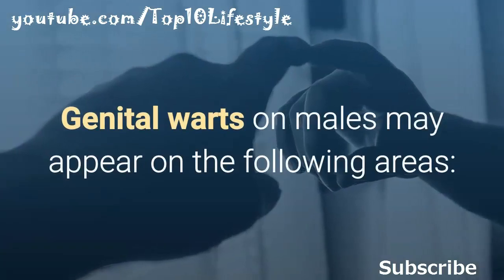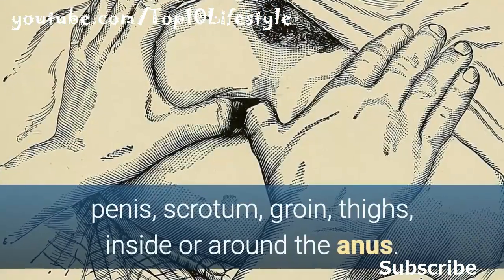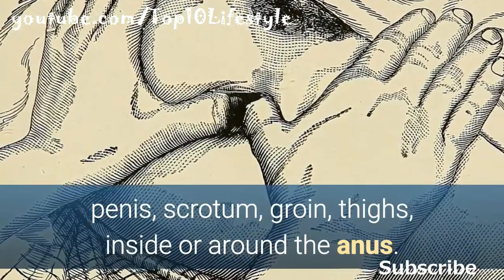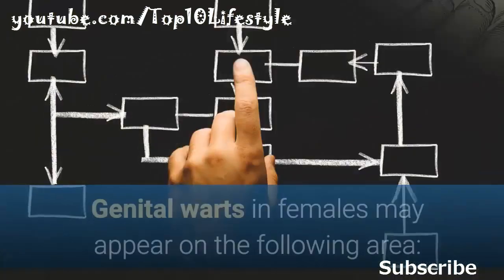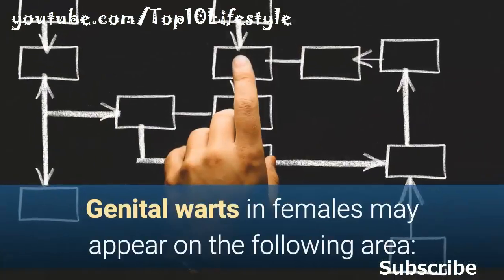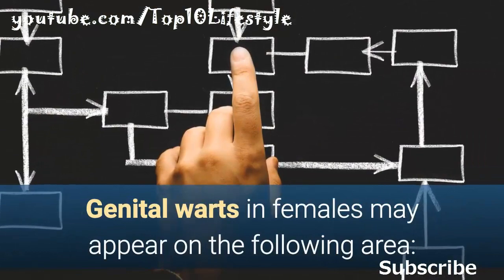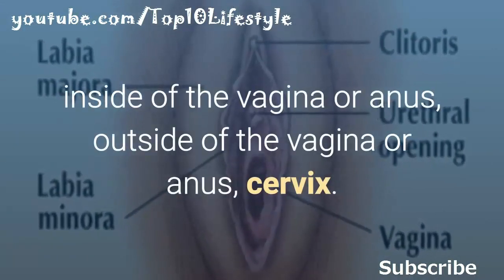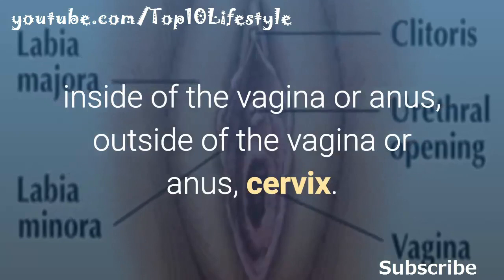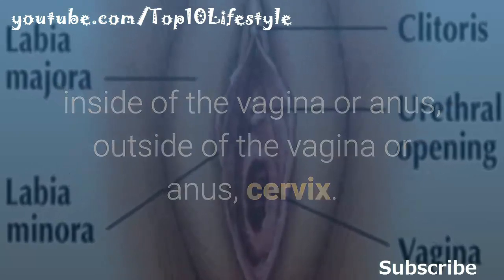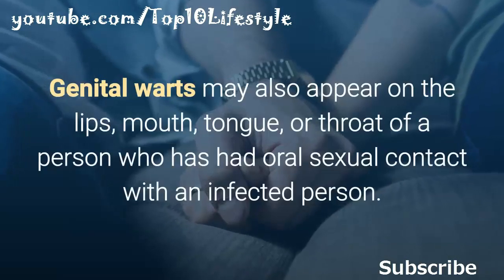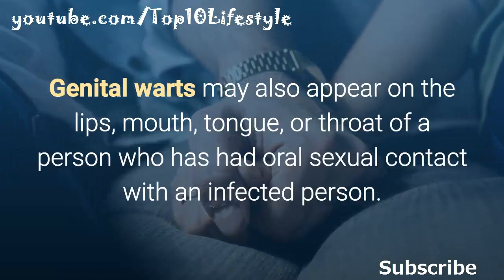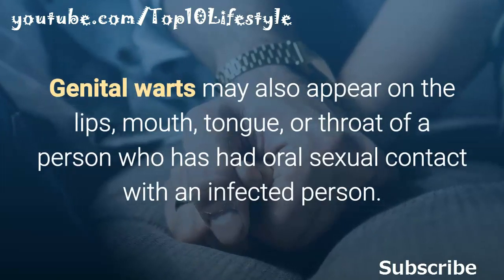Warts may occur as a cluster or just one wart. In males, genital warts may appear on the penis, scrotum, groin, thighs, or inside or around the anus. In females, genital warts may appear inside or outside of the vagina or anus, or on the cervix. Genital warts may also appear on the lips, mouth, tongue, or throat of a person who has had oral sexual contact with an infected person.